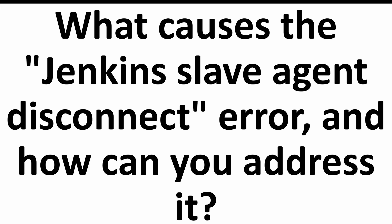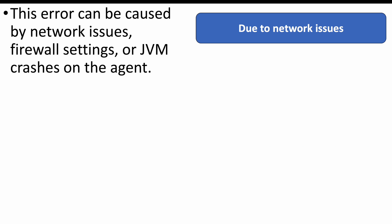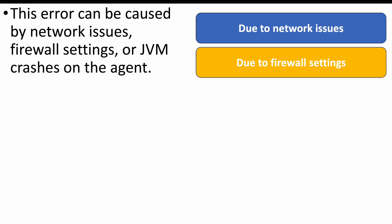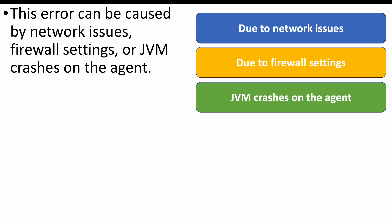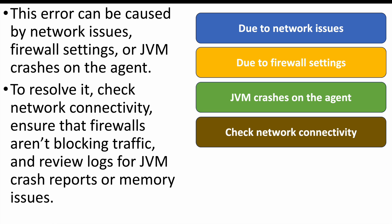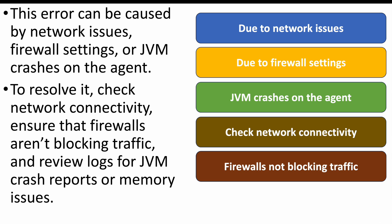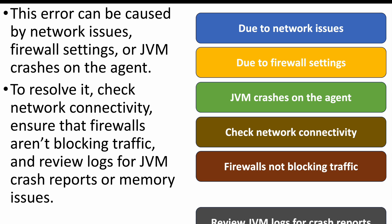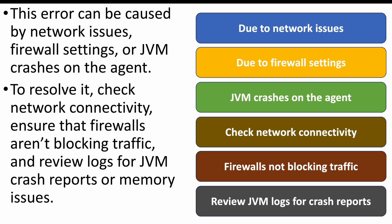The next question: what causes the Jenkins slave agent disconnect error and how can you address it? This error can be due to network issues, firewall settings, or a JVM crash on the agent machine. To resolve it, check network connectivity, ensure no firewalls are blocking traffic, and review the JVM logs for crash reports or memory issues.